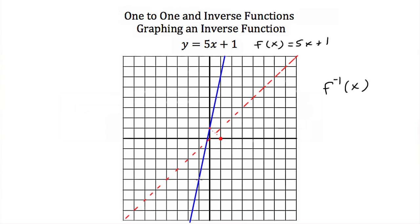We can find another point: our graph passes through (-1, -4). Reflecting that point across the line y = x gives (-4, -1), which also lies on the graph of our inverse function. The graph of our inverse function then looks like this — it's the same line as the original function, just reflected across y = x.